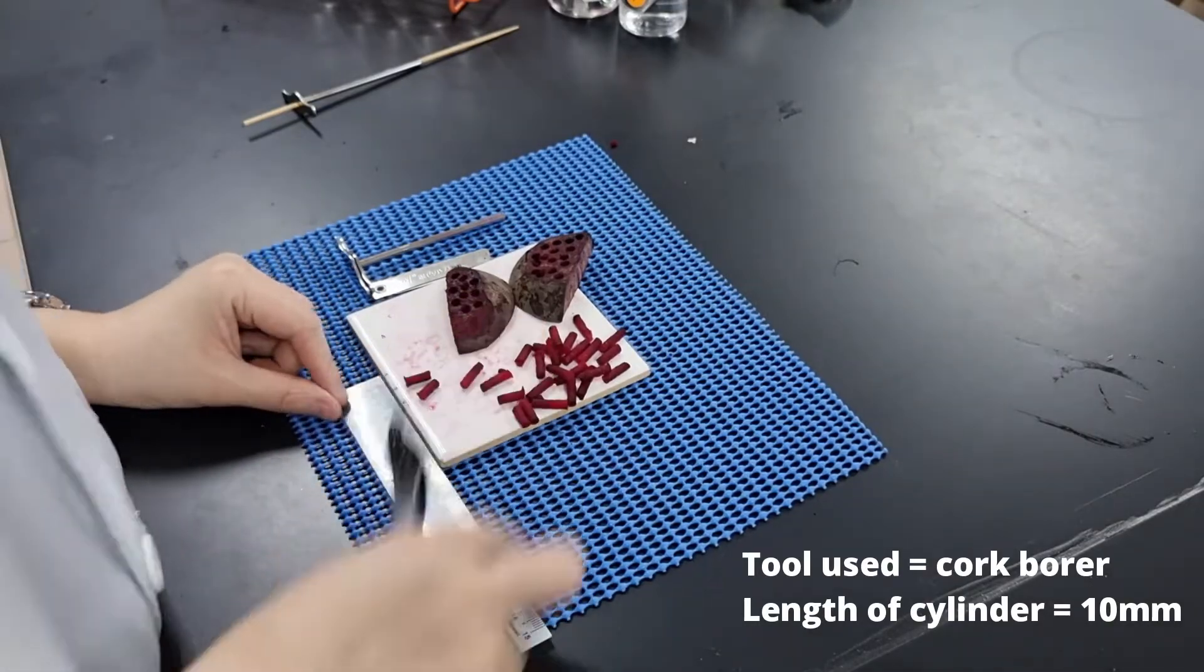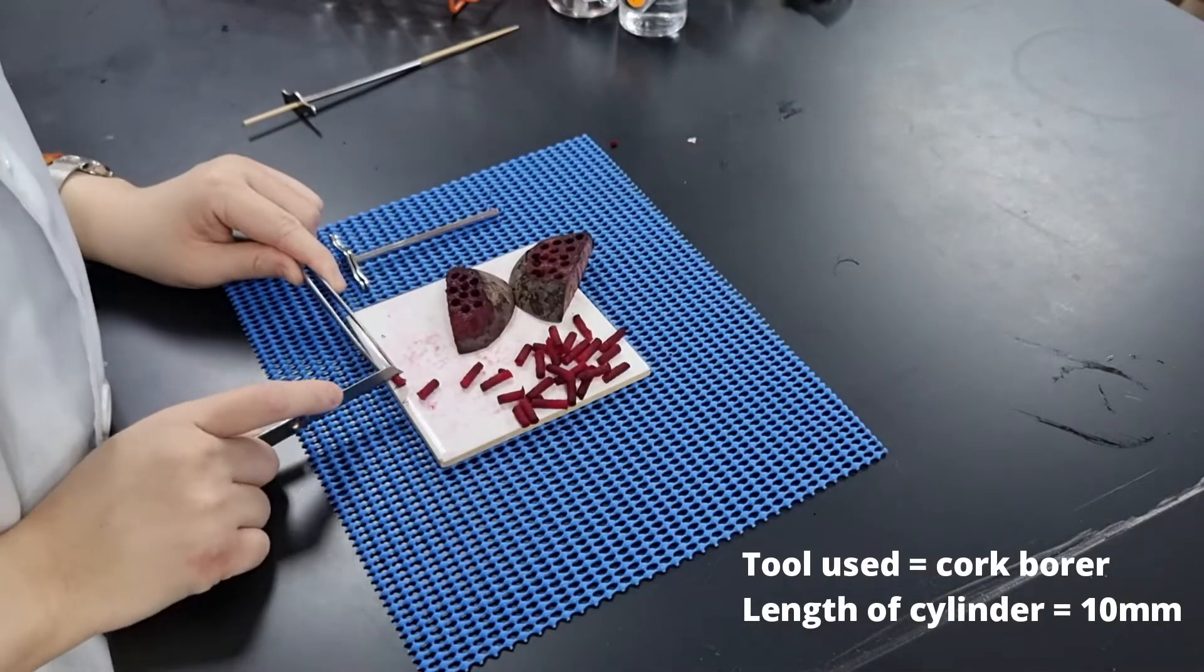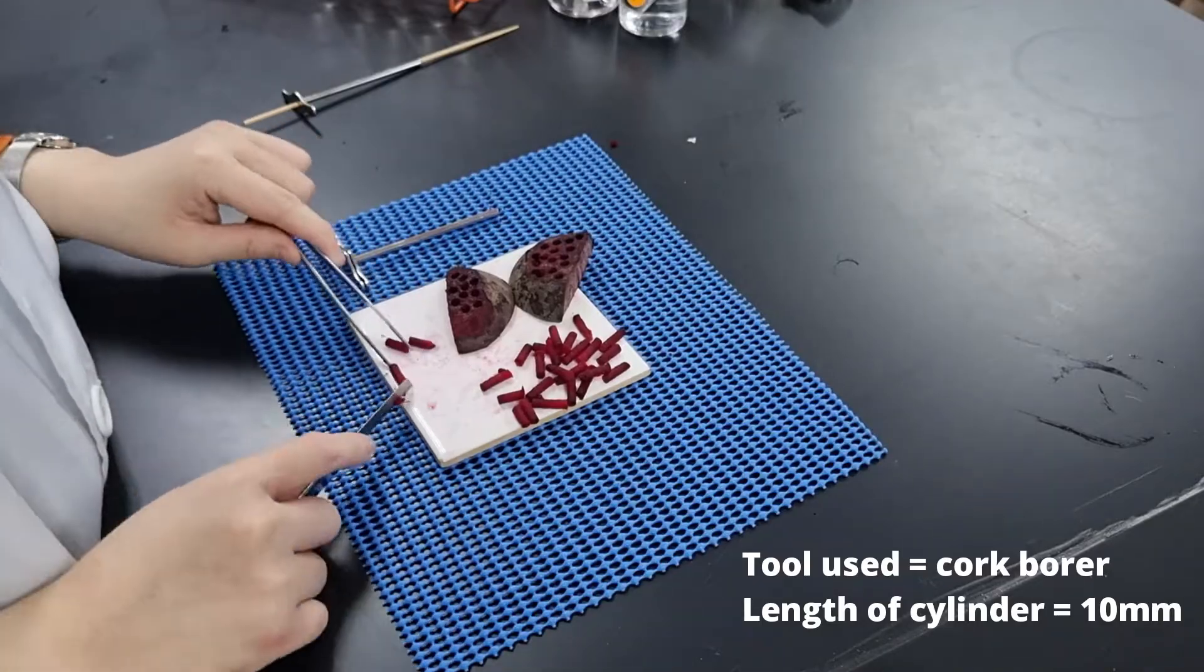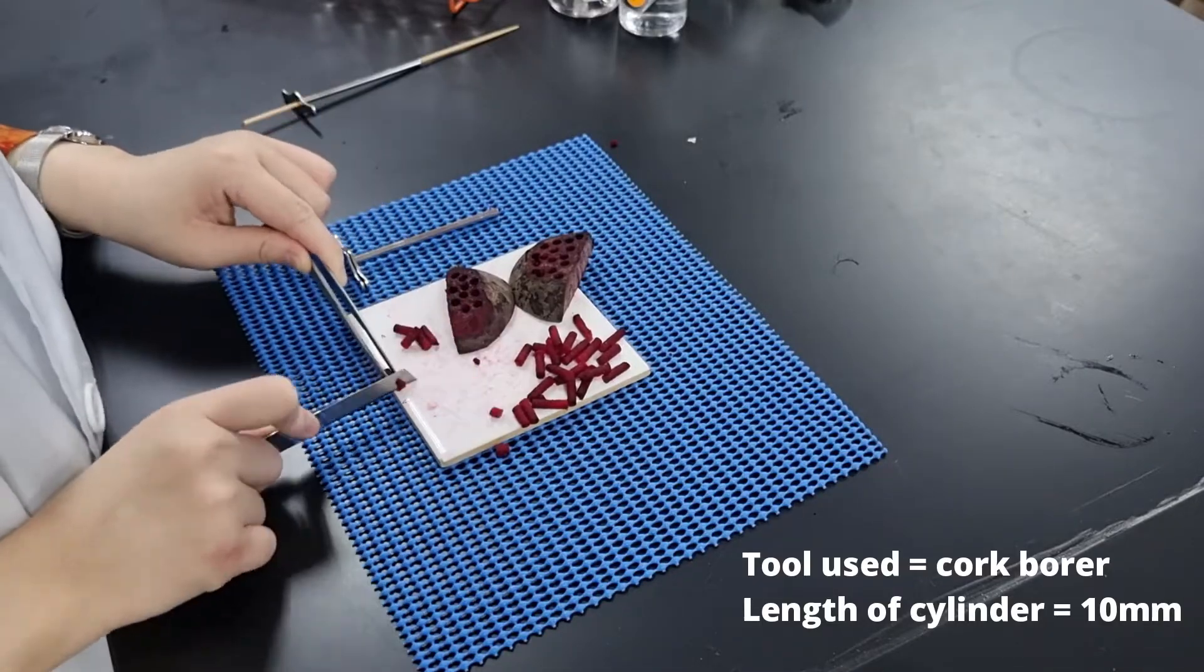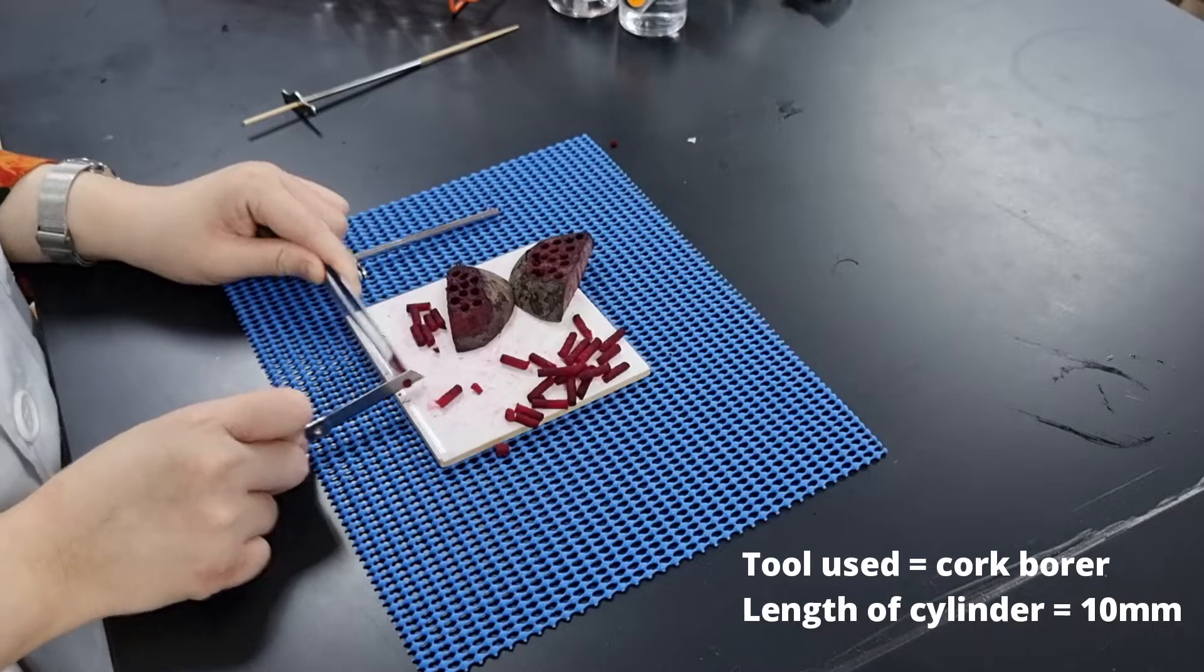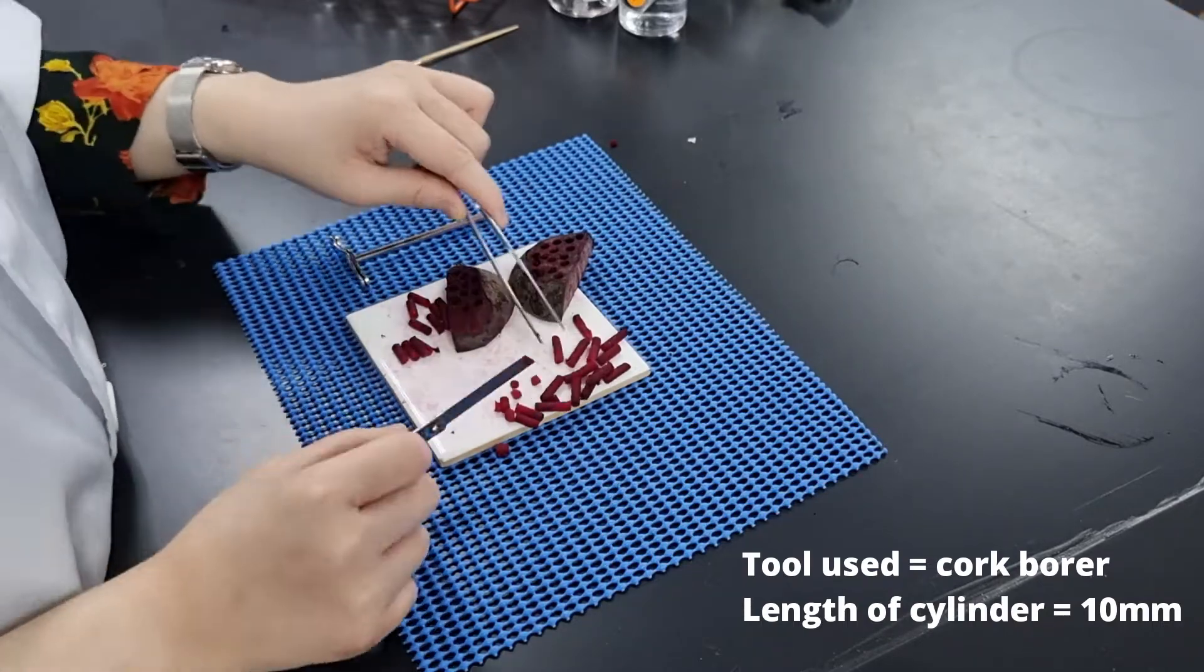We do that and we prepare five cylinders for each concentration. And since we have five concentrations, that means we have 25 beetroot cylinders to prepare in total.